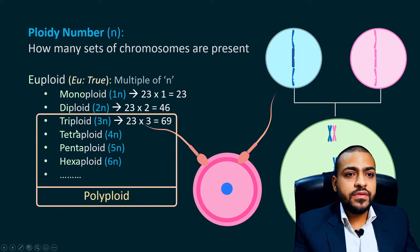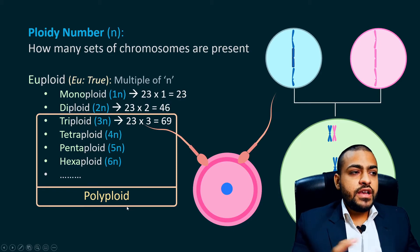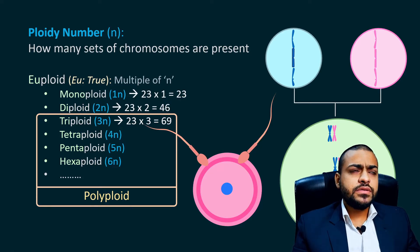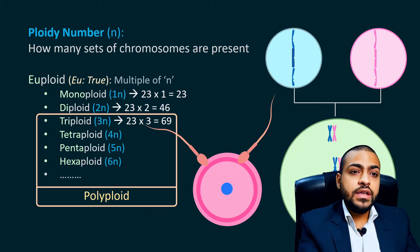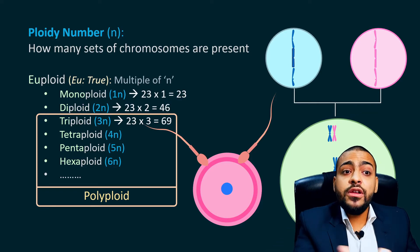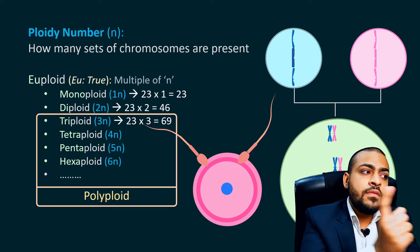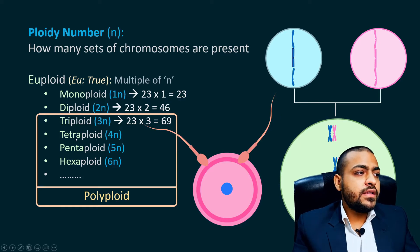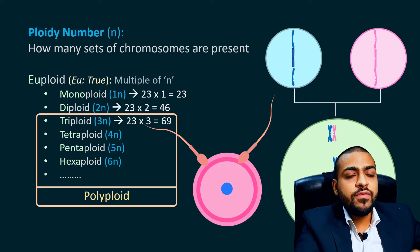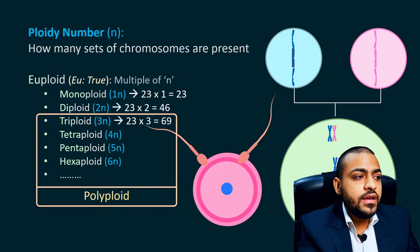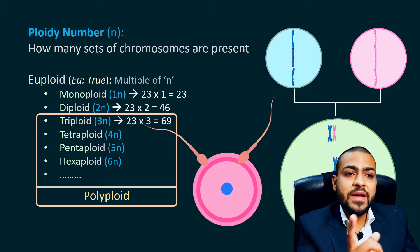Anything beyond diploid is also called polyploid. Some organisms other than humans — for example some plants and fishes, like banana — their cells may normally be polyploid. Normally humans and most organisms are diploid, but some organisms may normally be polyploid. For example, some species of wheat are normally hexaploid. That is something normal for those organisms, but if a human is polyploid, that is an abnormality, and we will discuss that later under chromosomal aberrations.